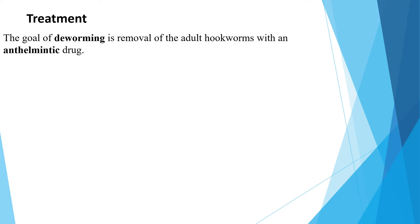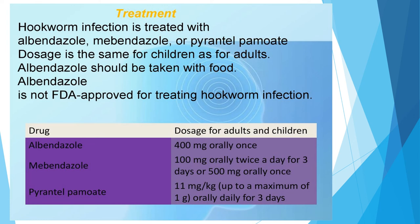The WHO currently recommends deworming for those in an endemic area, with the goal of removal of adult hookworms using anthelmintic drugs such as albendazole and mebendazole. Hookworm infection is treated with either albendazole, mebendazole, or pyrantel pamoate. Dosage is the same for children as for adults, and albendazole should be taken with food. Albendazole 400 mg orally once, or mebendazole 100 mg orally twice a day for three days, can be used for treatment in both adults and children.